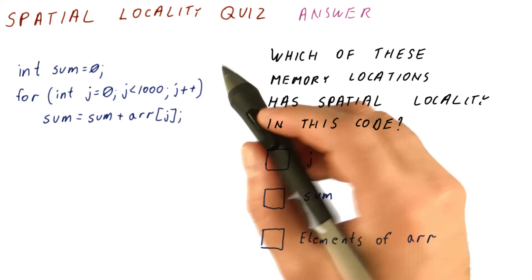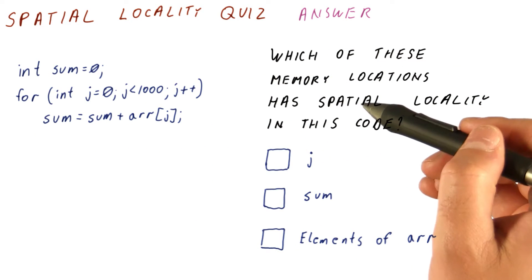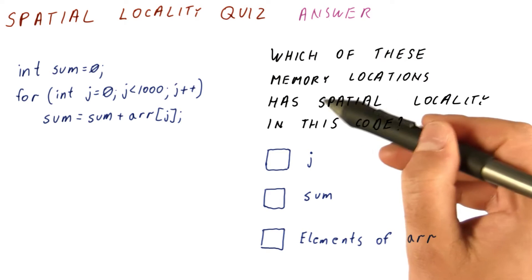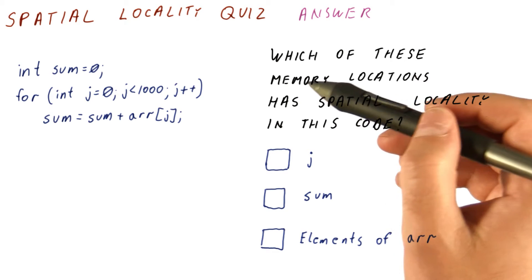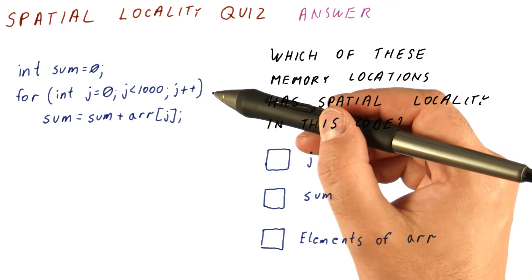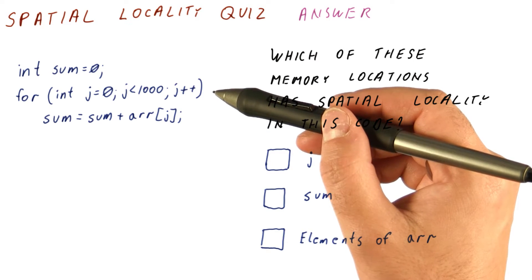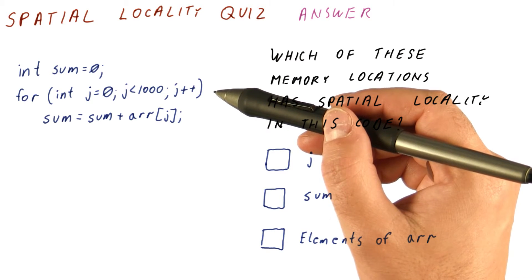Let's look at the answer to our spatial locality quiz. The question is, which memory locations have spatial locality? Remember that spatial locality says that once we access a memory location, we are likely to access nearby memory locations soon.